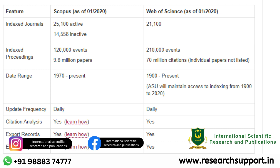Here is a small comparison about Scopus and Web of Science up to the year 2020. Scopus has 25,100 active indexed journals and 14,558 inactive journals. Web of Science has 21,100 indexed active journals and no inactive journals. Scopus has 120,000 events and 9.8 million papers indexed in proceedings. Web of Science has 210,000 events and 70 million citations. Scopus date range is from 1970 to the present, while Web of Science ranges from 1900 to the present. Both Scopus and Web of Science are updated daily, and both offer citation analysis, export records, export reports, and alert services.